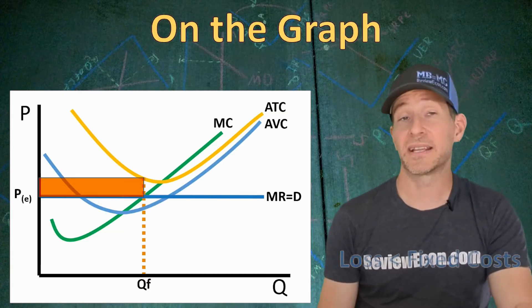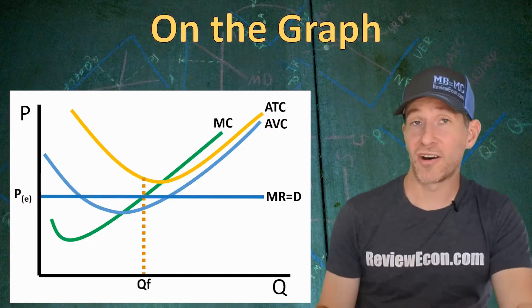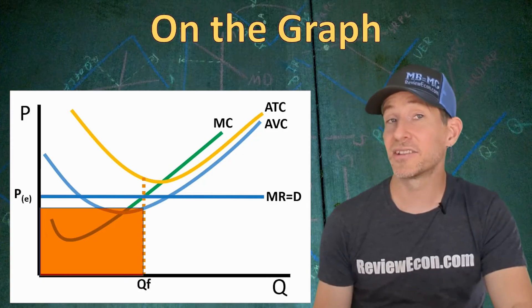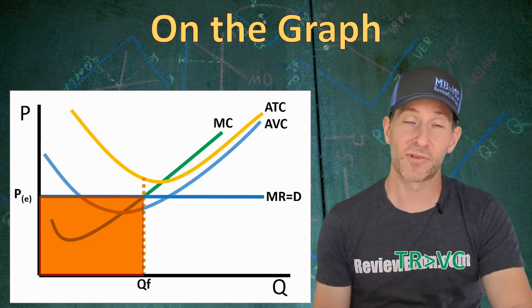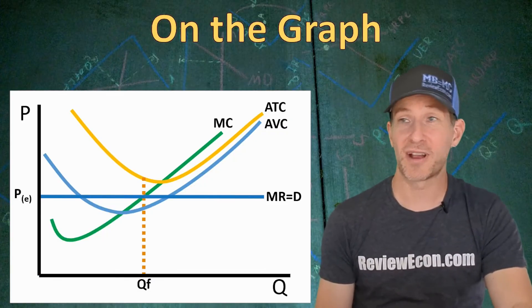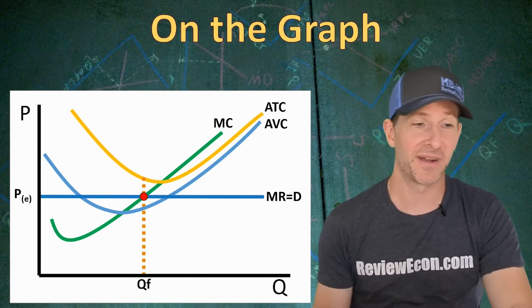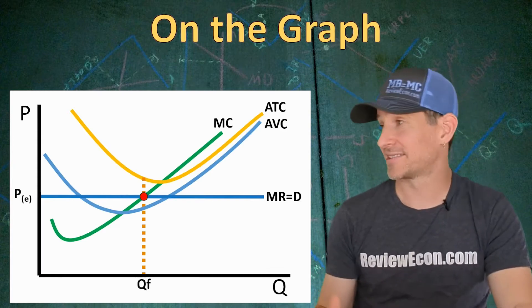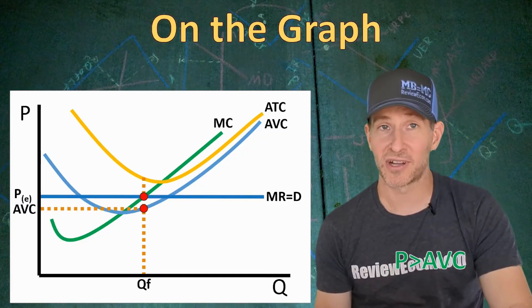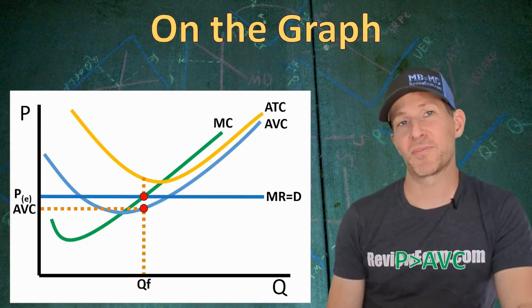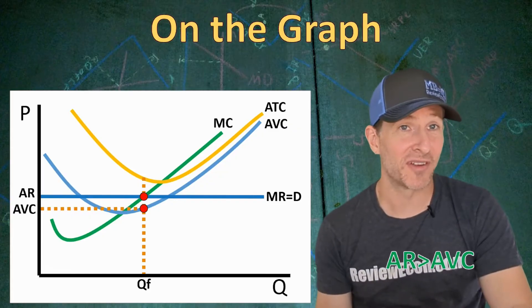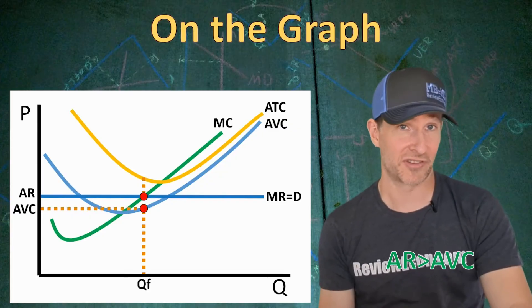This firm would choose to operate because the losses are less than the fixed costs. We can also see our total variable costs in that rectangle, and the total revenue is that rectangle there. Since the total revenue is greater than the variable cost, this firm loses less by operating. The price at the profit maximizing quantity is greater than the average variable cost at that quantity. And that equilibrium price from the market is the firm's average revenue as well. Since that average revenue is greater than the average variable cost, this firm loses less by operating in the short run.